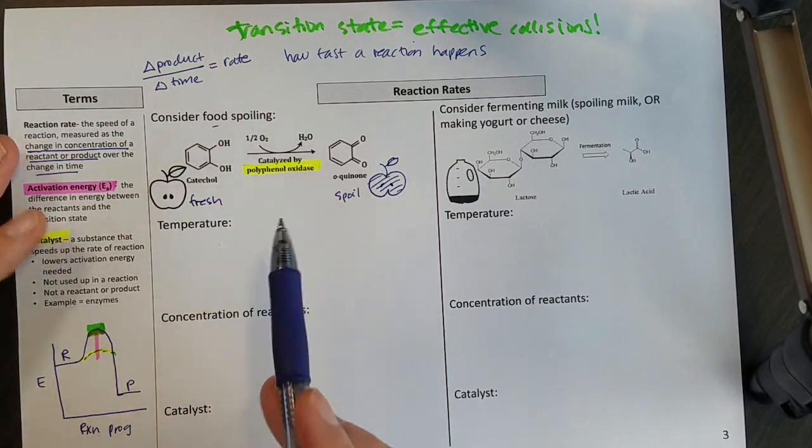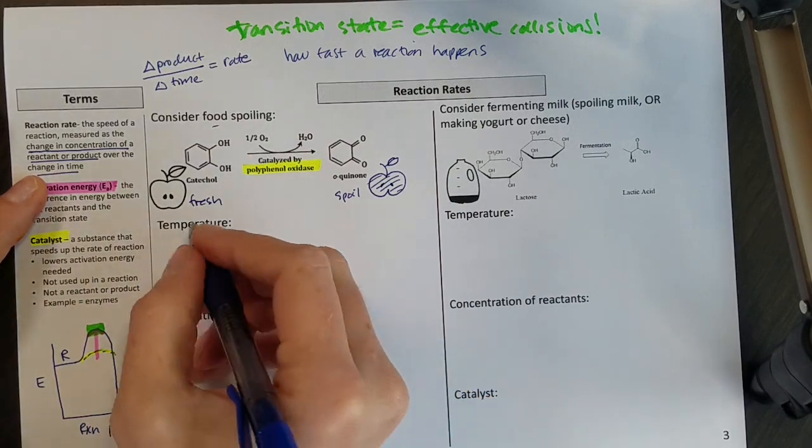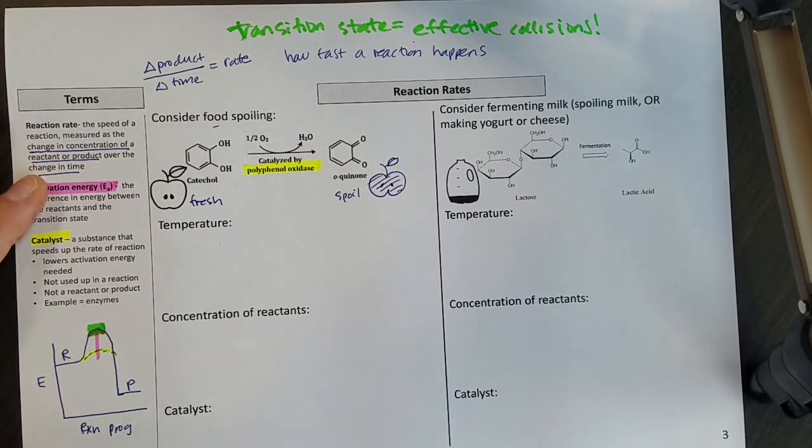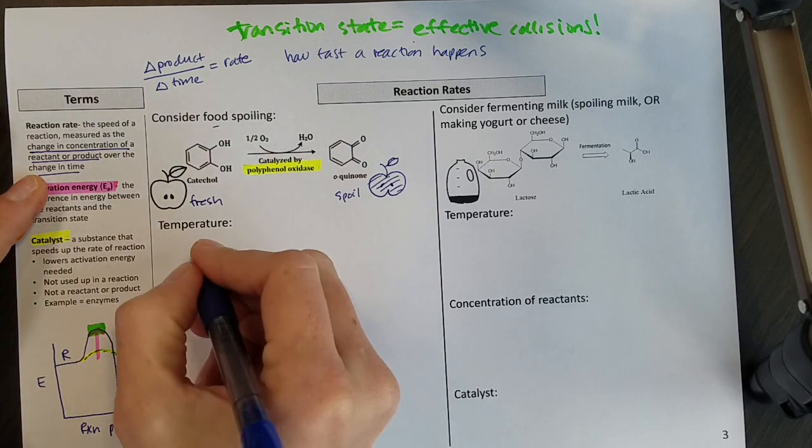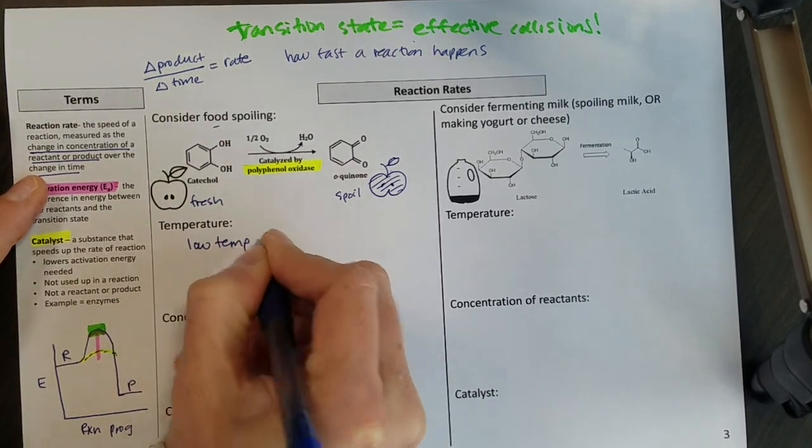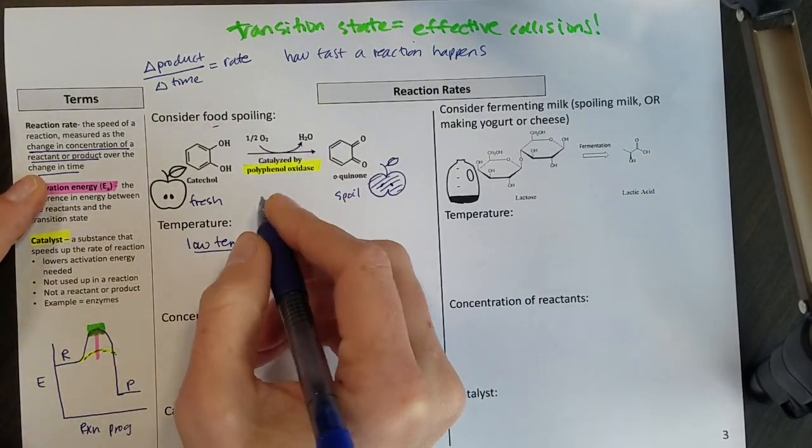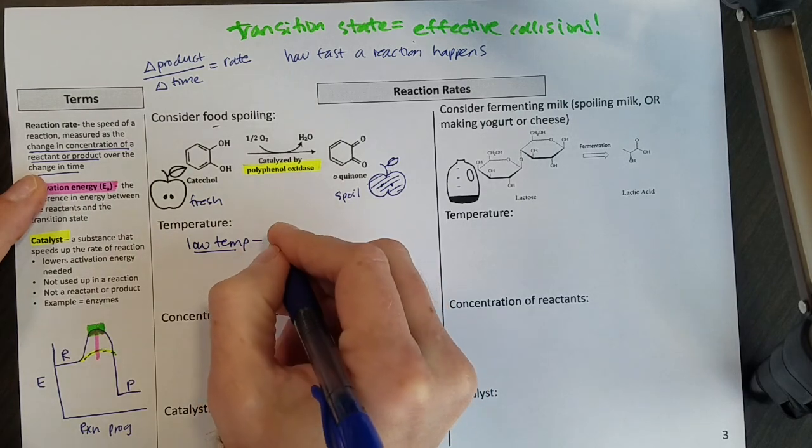If I want my food to not spoil, then I'm thinking, how do I slow this reaction down? So one way to keep your food fresh and slow the reaction down is to put it in the refrigerator or put it in the freezer. So we could say that at low temperatures, like the refrigerator or the freezer, then my food is going to be slower to react.